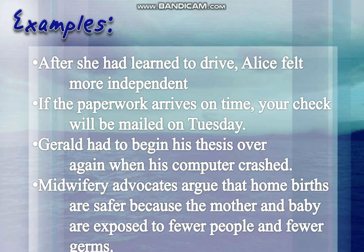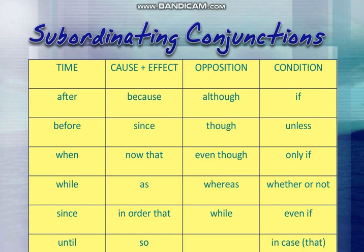Now you have to write different sentences using each type of conjunction. Use the examples of subordinating conjunctions shown here — write five sentences for each type of conjunction. You have to write five sentences for each type using different conjunctions in them. See you in my next class, bye bye.